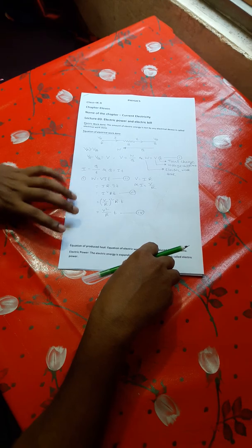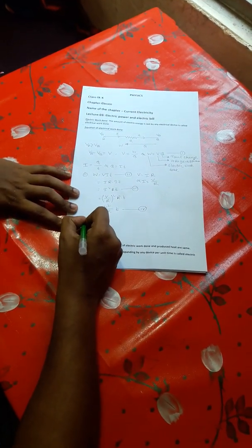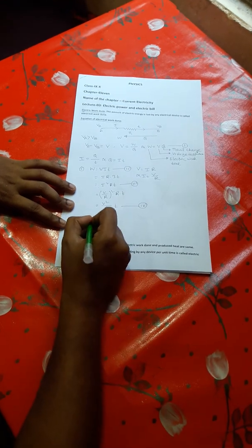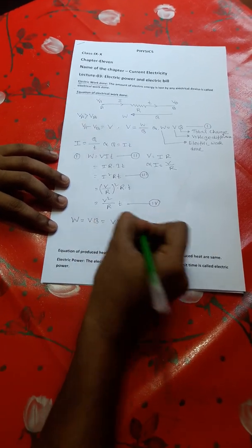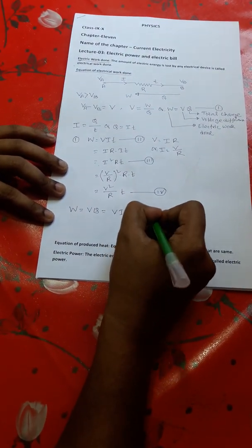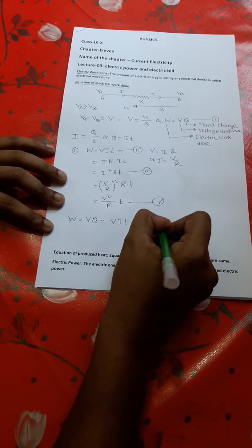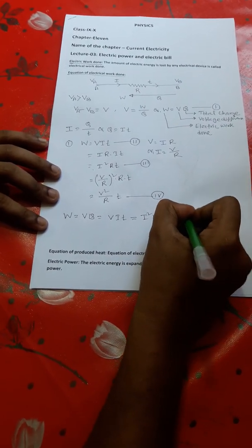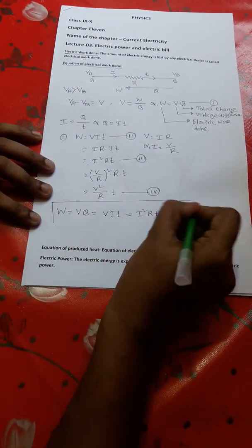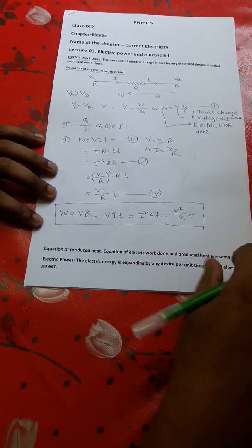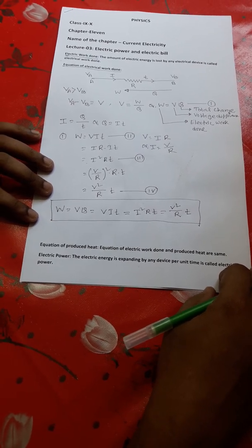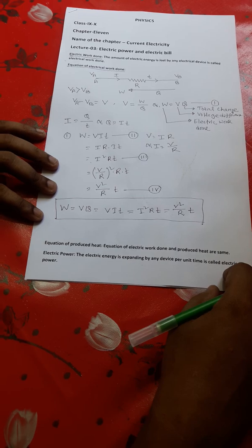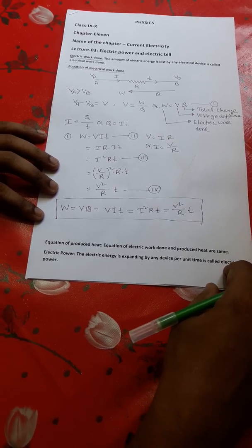In summary, the complete equations of electric work done W are: first, W = V·Q; second, W = V·I·T; third, W = I²·R·T; and fourth, W = V²/R·T. These are the complete equations of electrical work done.